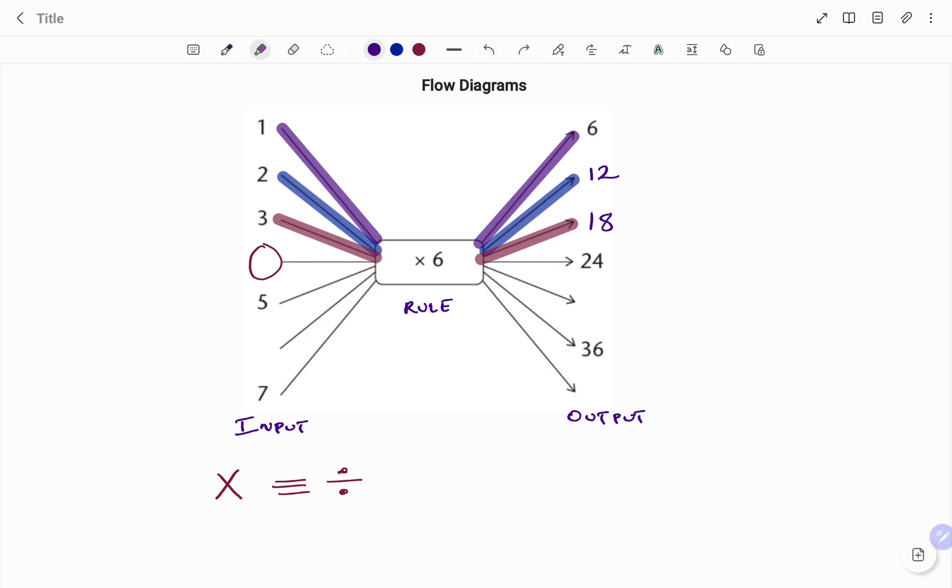24 will now be my new input because I'm working backwards. So I have 24 going in and then the inverse function, that will be divided by 6. So the inverse will be division. I have divided by six.